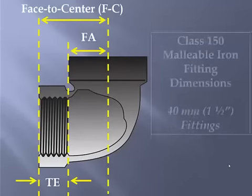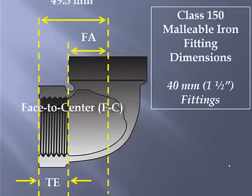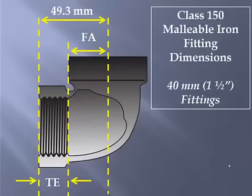So let's take a look at some actual measurements from an inch-and-a-half malleable iron fitting. We're using metric dimensions. So an inch-and-a-half malleable iron fitting is often referred to as a 40 millimeter fitting. So the face-to-center of a 40 millimeter malleable iron fitting is 49.3 millimeters. The thread engagement is 17.8 millimeters. Again, these dimensions are well published and easily referable.